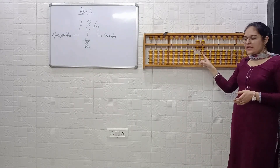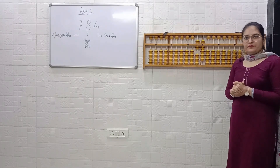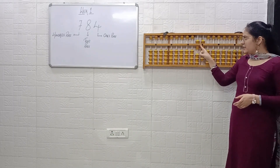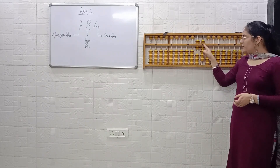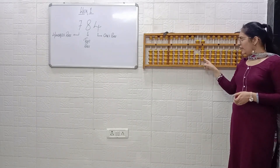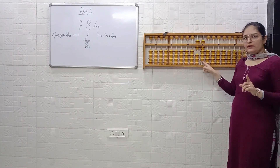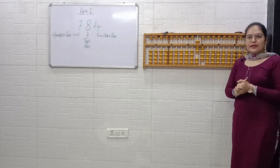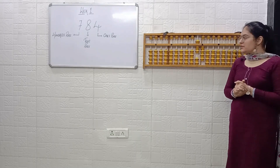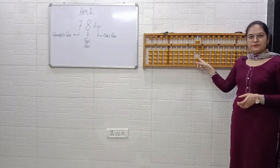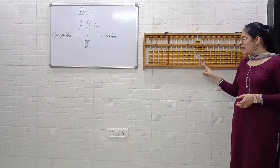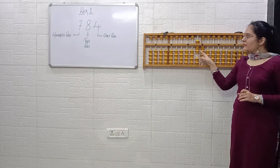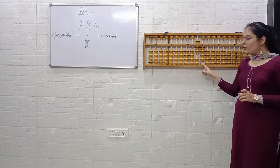Next — you will read the tens place then the ones place. Tens place: 5, 6. Keep that 6 in your mind. Ones place: 5, 6, 7, 8, 9. Answer is 9. So 6, 9 — that is 69. Next example: tens place is 5, 6, 7 — that is 7. Ones place is 1, 2, 3, 4 — that is 4. So the answer is 74.